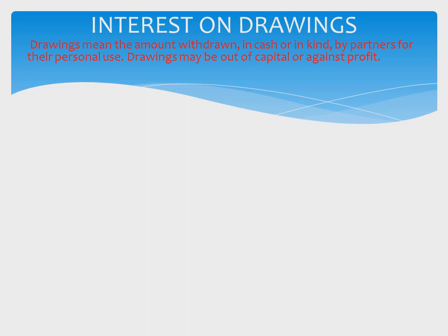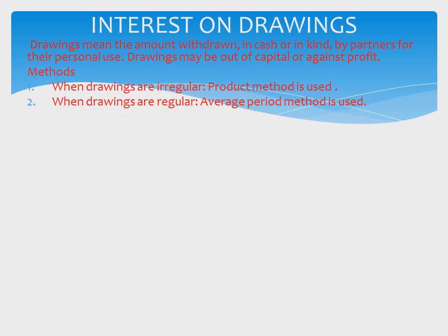Drawings may be out of capital or against profit. Drawing out of capital means a part of the drawing is withdrawn from capital. Drawing against profit means drawing by a partner against his or her share of expected profit for the year. The firm charges interest on such drawings at an agreed rate. If the partnership deed does not exist or does not provide for charging interest on drawings, interest on drawings is not charged. Interest is also not charged if drawings are made out of capital.